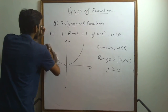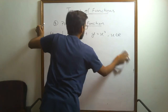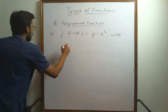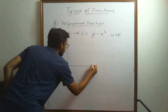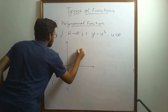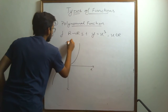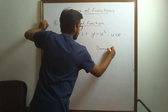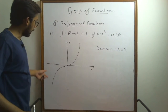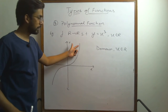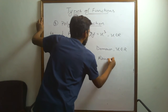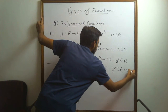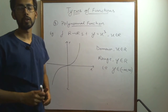If I take a different polynomial function, say y is equal to x cubed, this is a cubic polynomial function. The graph of this function extends from minus infinity to plus infinity. It is defined for all real numbers, so the domain is R, and the function goes from minus infinity to plus infinity, so the range is the set of real numbers — that is, y belongs to the interval from minus infinity to infinity.